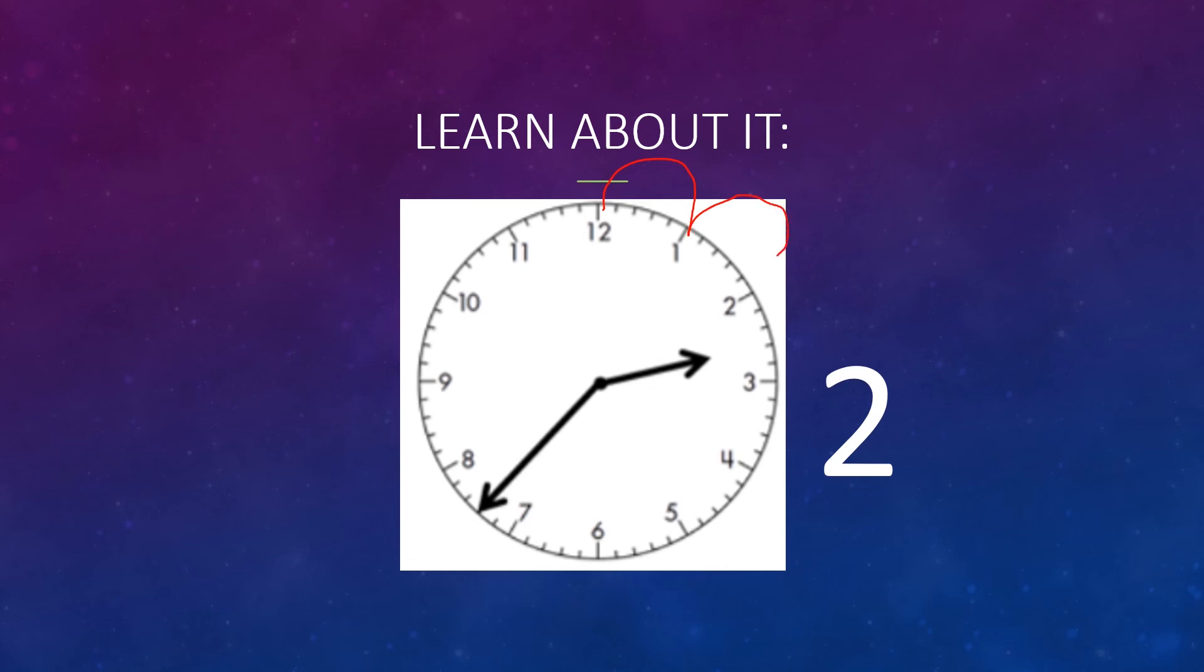5, 10, 15, 20, 25, 30, 35. Should I stop here at the 7 or go on to the 8? That's right, we'll stop at the 7, which means we have 35 minutes.